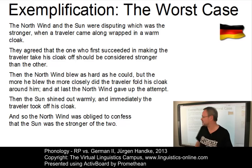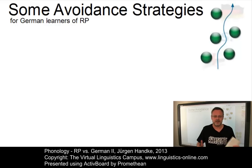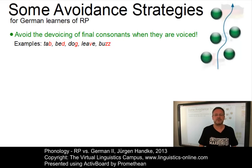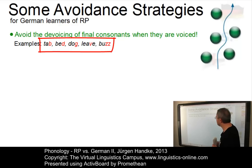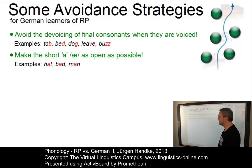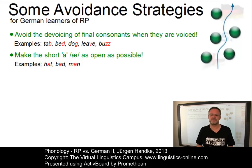In order to achieve good pronunciation, we need a number of avoidance strategies for German learners of RP — the result of studying both segmental and suprasegmental differences between RP and modern German. First, avoid the de-voicing of final consonants when they are voiced: TAB, BED, DOG, LEAVE, BUZZ — make the vowel extra long to achieve the voicing effect. Second, make the short A, the ash, as open as possible: HAT, BAD, MAN — use the German short A rather than the German short E.